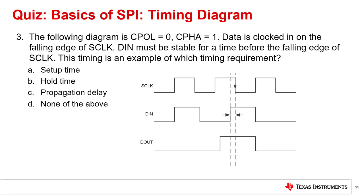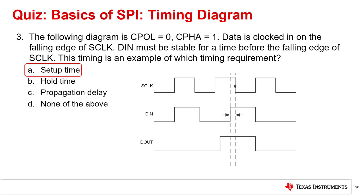Question 3: The following diagram uses CPOL=0 and CPHA=1. Data is clocked in on the falling edge of S-Clock. DIN must be stable for a time before the falling edge of S-Clock. This timing is an example of which timing requirement? The correct answer is A, setup time.